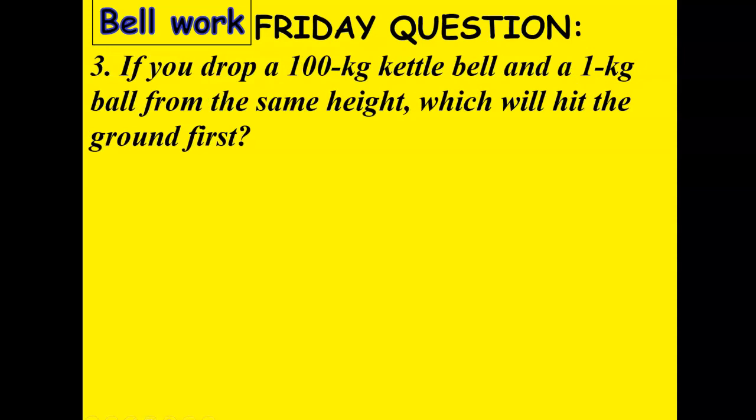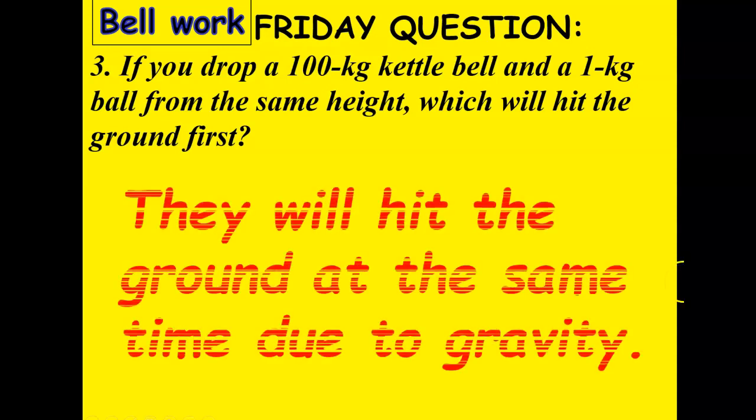Next problem: if you drop a 100-kilogram kettlebell and a 1-kilogram ball from the same height, which will hit the ground first? Remember, everything falls at the same rate because of gravity. Everything in terms of speed will be different, but the rate in which that speed changes to hit the ground or to reach the earth is the 9.8 meters per second squared. Since these two objects, even though they're different masses, are falling from the same height, they will hit the ground at the same time due to the acceleration being the same rate.